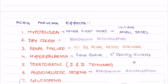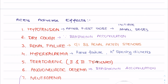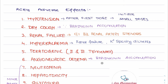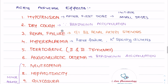Moving on to the adverse effects of ACE inhibitors: the first and most common side effect is first-dose hypotension, which can be limited by initiating with small doses. ACE inhibitors can cause dry cough, mainly due to accumulation of bradykinin. They can cause renal failure, especially in individuals with bilateral renal artery stenosis, and are therefore contraindicated in that condition.